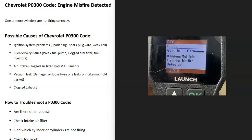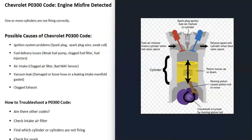Today I'm talking about a Chevy with the P0300 code — what it is and how you go about fixing it. The P0300 code is engine misfire detected. It basically means that one or more cylinders is not firing correctly, because the engine needs the right air-fuel ratio mixture going into the cylinders and a spark plug to fire at the right time to ignite that mixture. When either of those things goes wrong, the mixture won't ignite and you'll get a misfire.